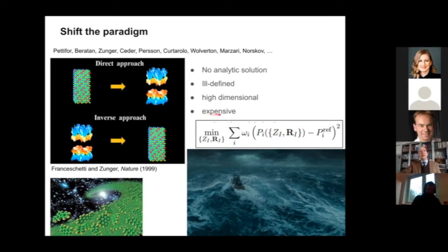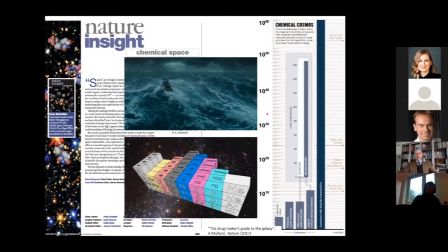You would like to minimize its deviation from some reference target property. You might have multiple properties, so you might want to assign some weight to each property, and then you need to navigate what is known as a Pareto front. Doing this minimization is very hard, and this is a little bit the context within which we are trying to speed up things.